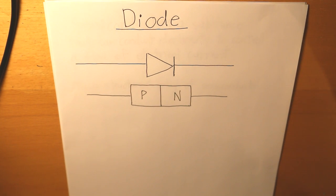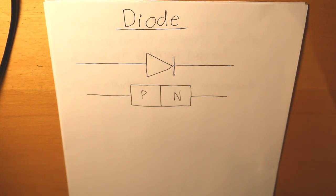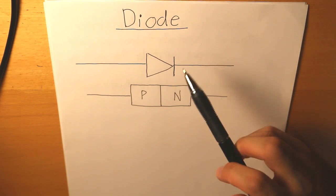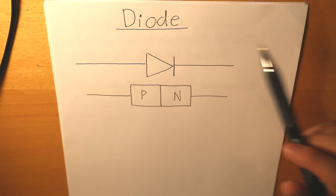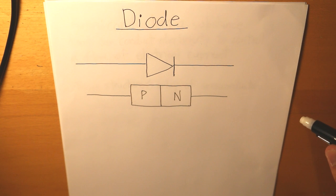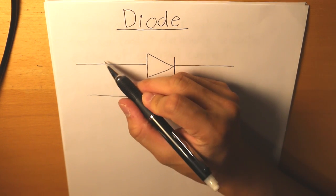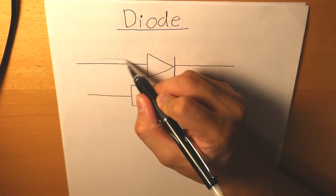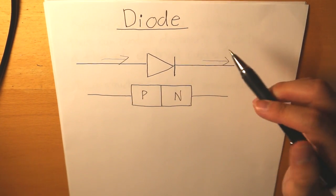In today's video we will be talking about how diodes are formed. Let's start off with the purpose of a diode — why do we use a diode in an electrical circuit? A diode is useful because it allows current to travel in one particular direction while blocking the other way.